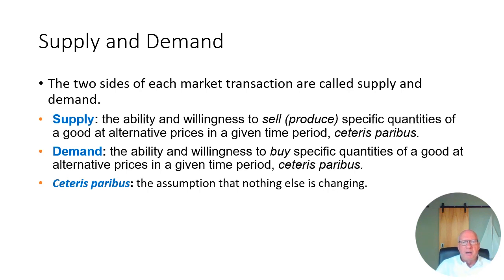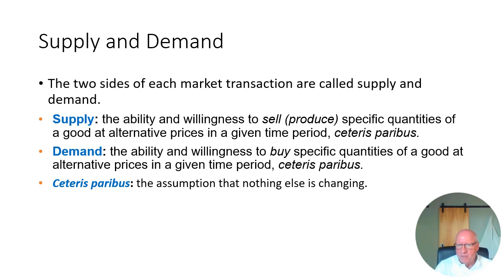Supply and demand — the two sides of a market transaction. You have to have a buyer and a seller, and we call those supply and demand. The supply side is the ability and willingness to sell or produce a specific quantity of a good at alternative prices in a given time period, ceteris paribus.